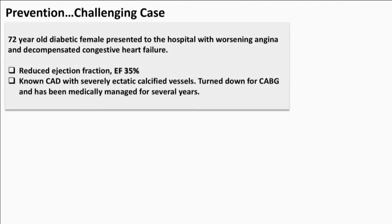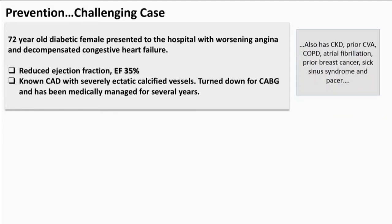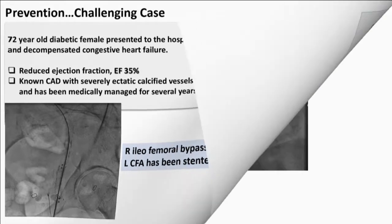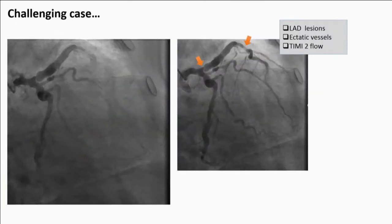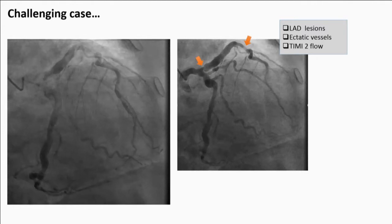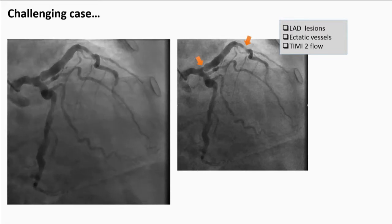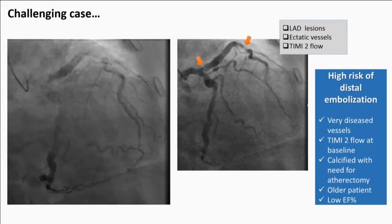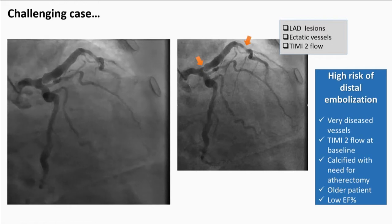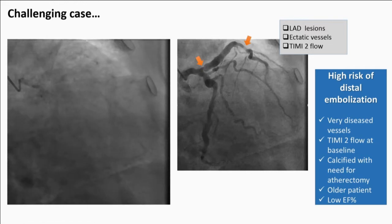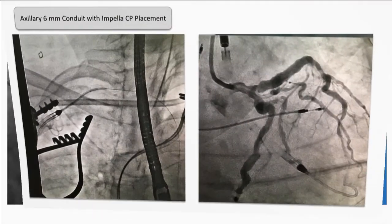The last case focuses on prevention. This is a 72-year-old diabetic female with worsening angina, decompensated heart failure, low EF, turned down for CABG, and PAD with a stented left common femoral. Her baseline coronary anatomy shows TIMI-2 flow, ectatic vessels, and calcium. This patient is extremely high risk for distal embolization: diseased vessels, TIMI-2 flow, calcification requiring atherectomy, older age, and low EF.